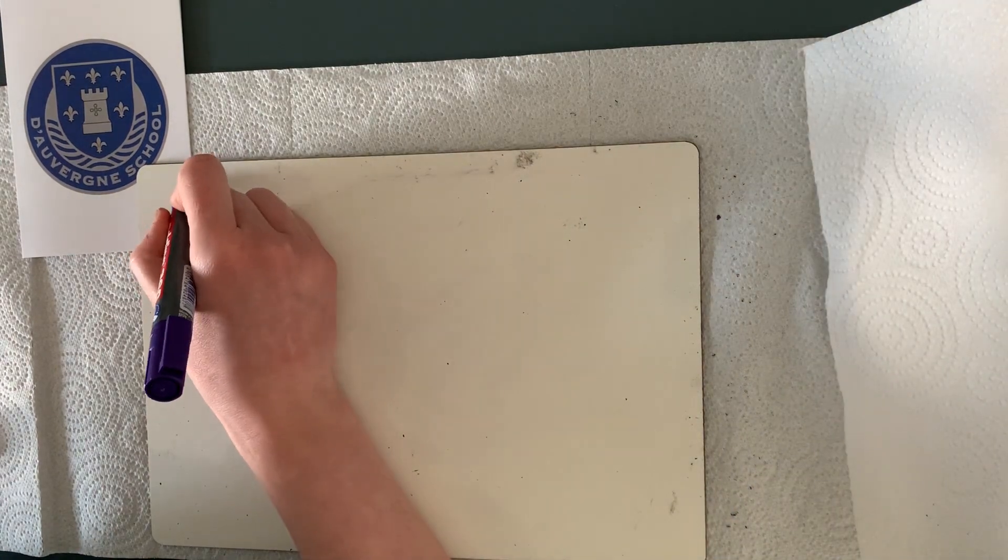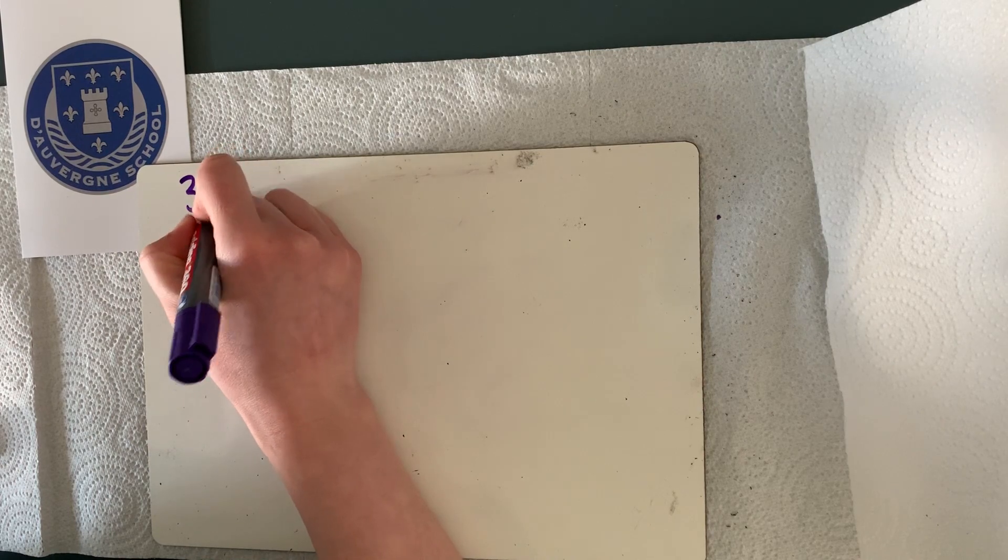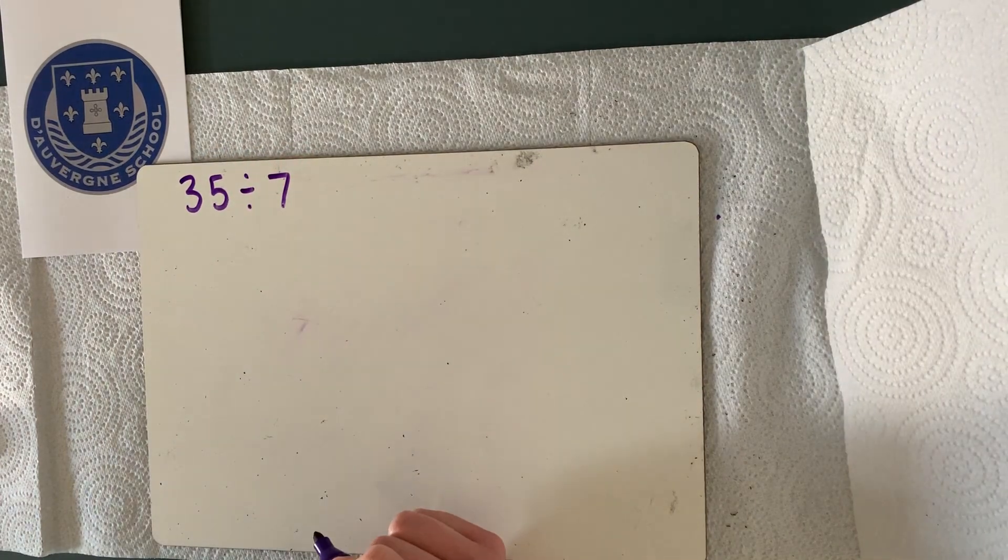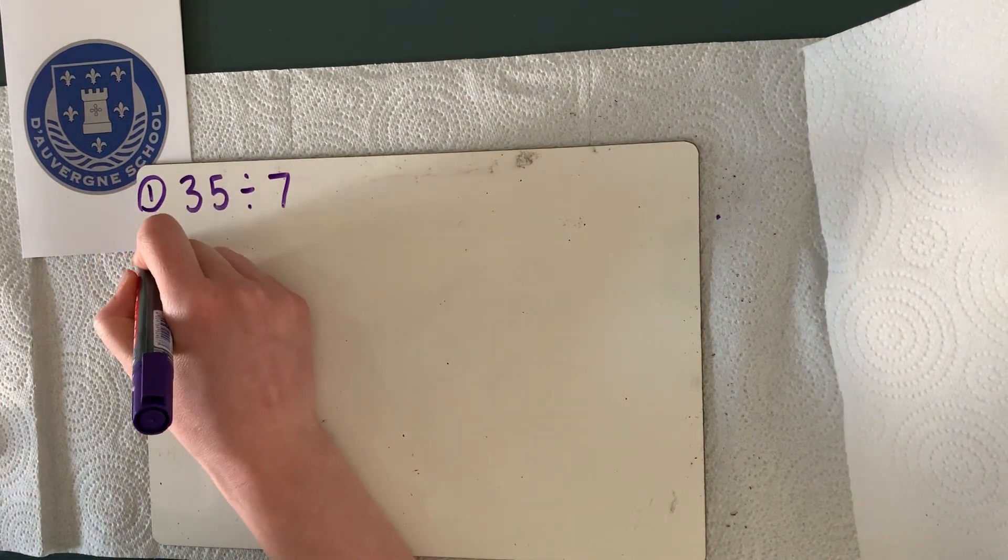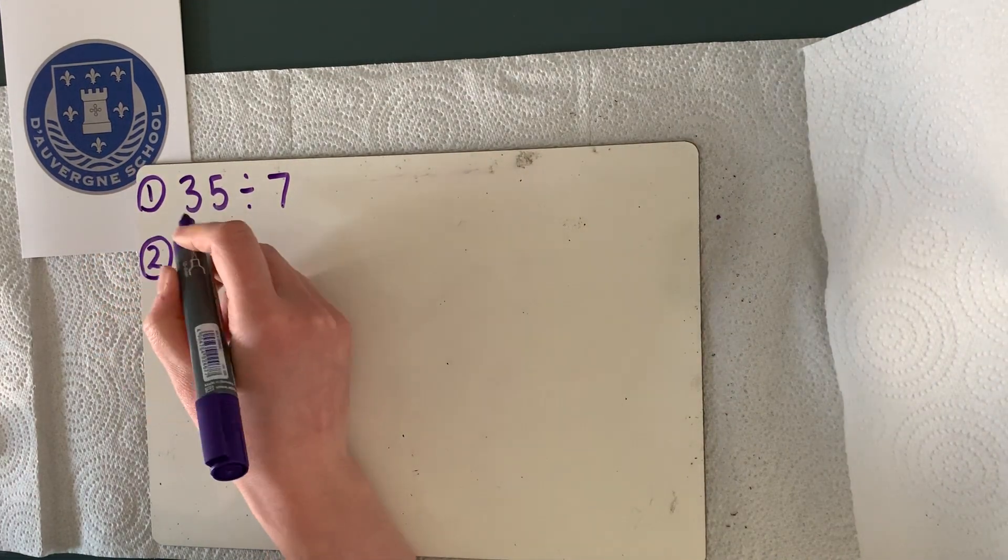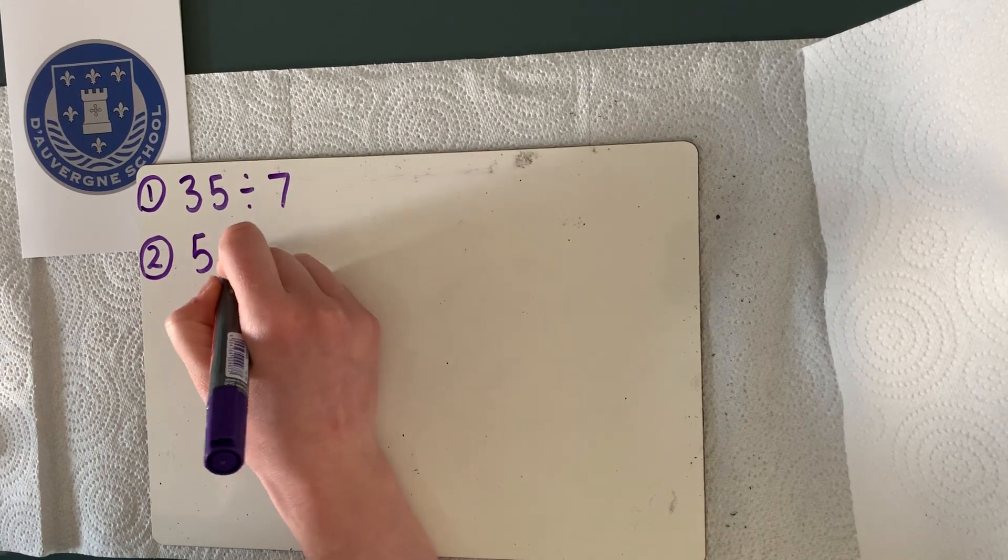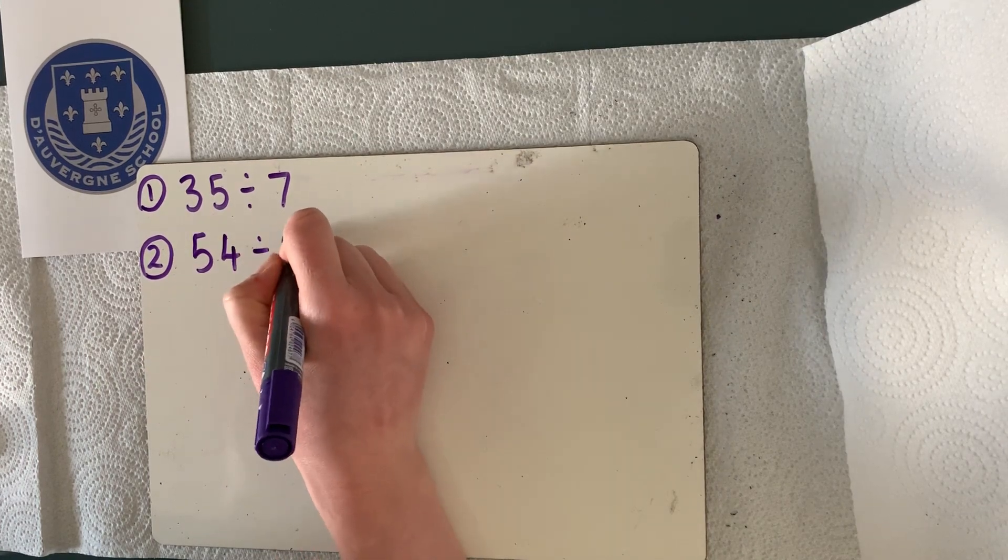So the first one is 35 divided by 7. The second one is 54 divided by 9.